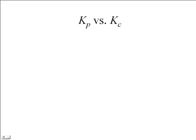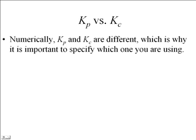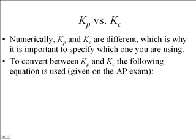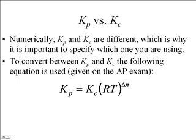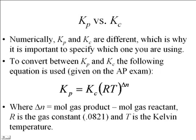KP and KC are not the same thing — one uses pressures, one uses concentrations, so numerically they are different. This equation, given on the AP exam, allows you to convert between them: KP equals KC times R — the gas constant, 0.0821 — times T in Kelvin, raised to the power of delta N. Delta N is the moles of gas products minus the moles of gas reactants.